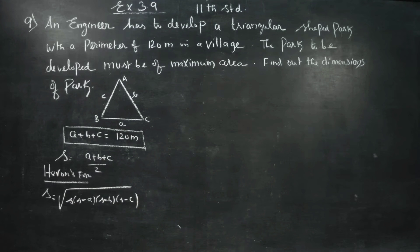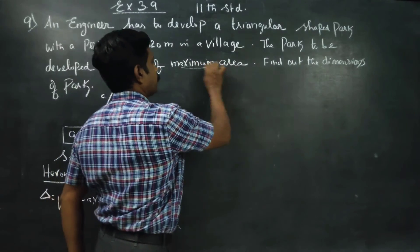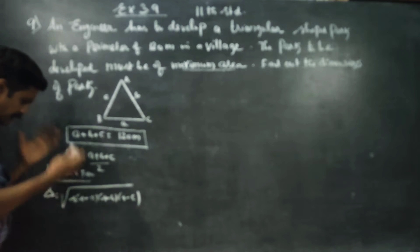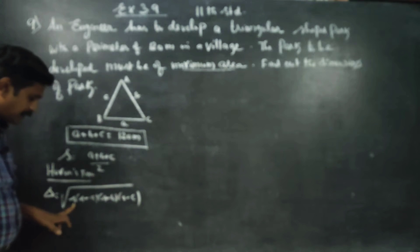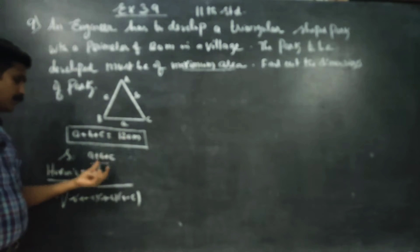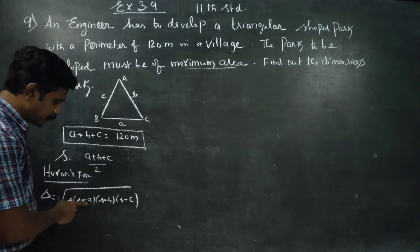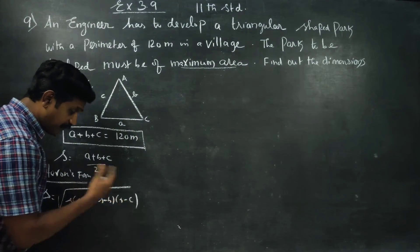For delta to be maximum, we need the product inside to be maximum. The semi-perimeter s equals 120 by 2, which is a constant. The variables are a, b, and c — A, B, C are the variables. So s minus a, s minus b, s minus c are the terms that change.